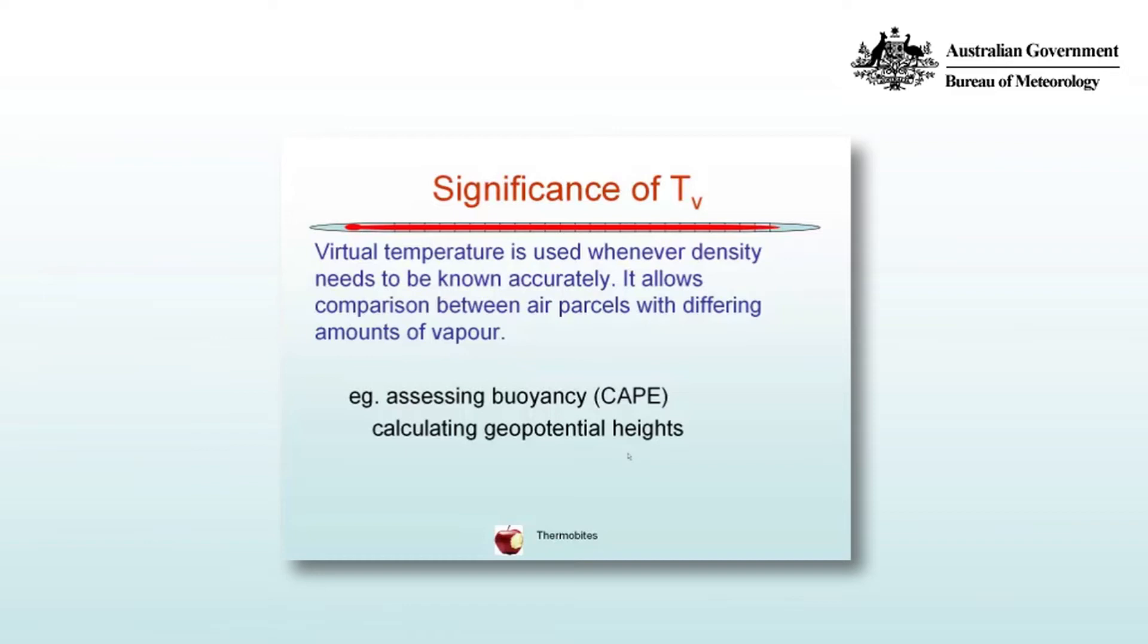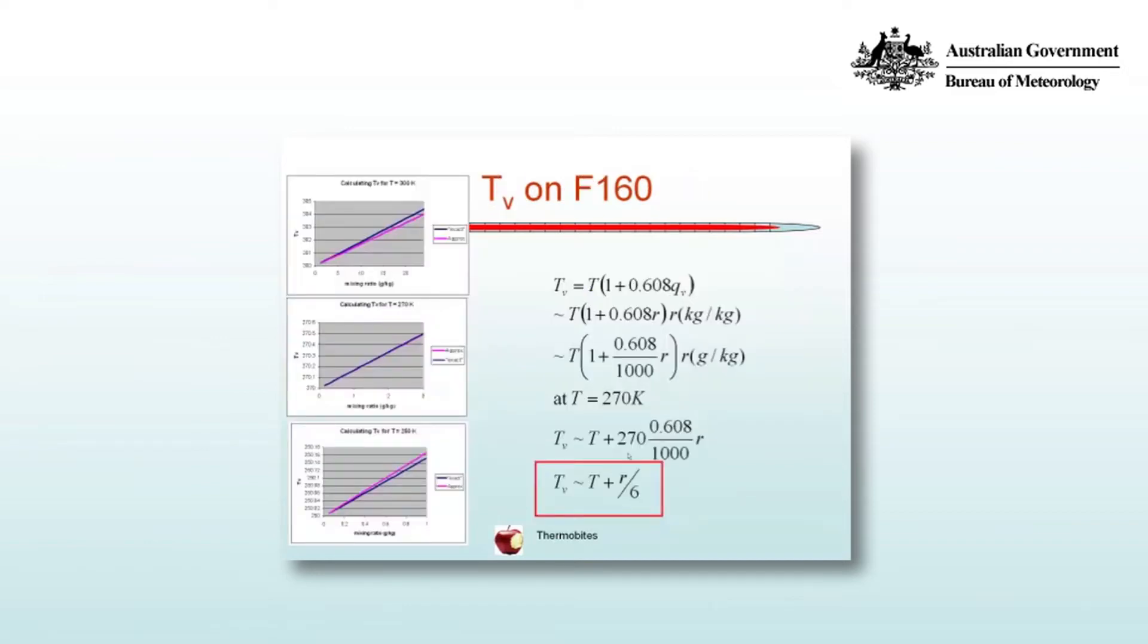We can take the expression for virtual temperature and simplify it slightly. So the expression we derived before is Tv is T multiplied by 1 plus 0.608 Qv. And we can approximate Qv by R, and we know that's accurate to within 4%.